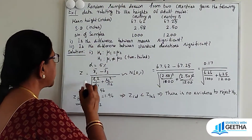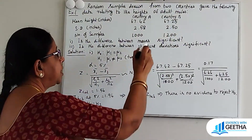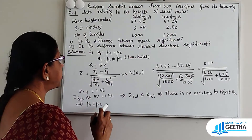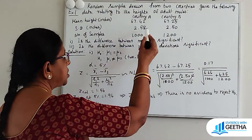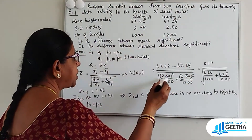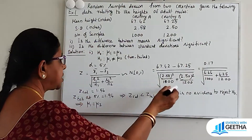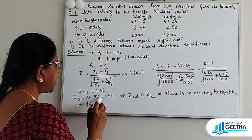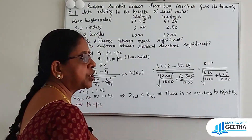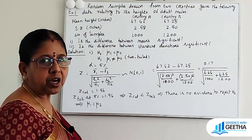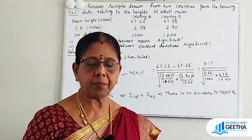Z = (X1_bar − X2_bar) / sqrt(S1² / N1 + S2² / N2), follows Normal(0,1). Substituting: Z = (67.42 − 67.25) / sqrt(2.58² / 1000 + 2.50² / 1000). On simplification, Z calculated = 1.56. Z table value at 5% is 1.96. Since Z calculated < Z table value, there is no evidence to reject H0. Therefore H0 is accepted: mu1 = mu2, meaning there is no significant difference between the means.